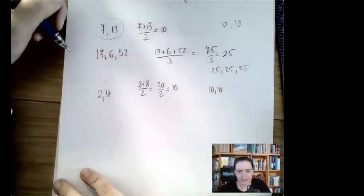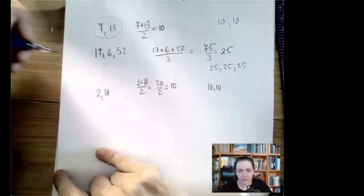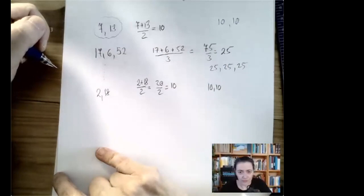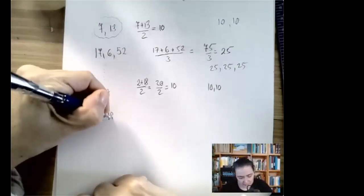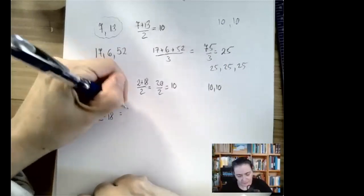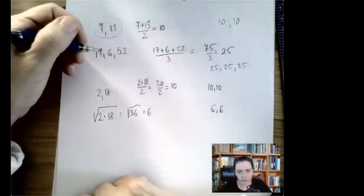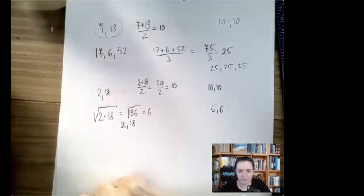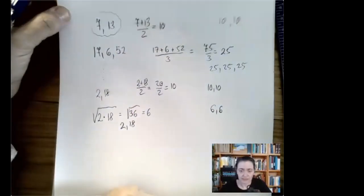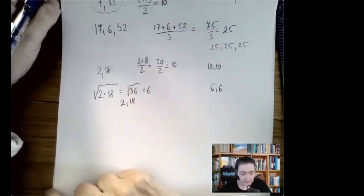Ten and ten are two numbers whose sum equals two plus eighteen. Now, what two identical numbers have the same product as two times eighteen? That would be the square root of two times eighteen. I intentionally chose nice numbers — six and six are two identical numbers that have the same product as two and eighteen. We can do that with three numbers too, flattening out with respect to multiplication.